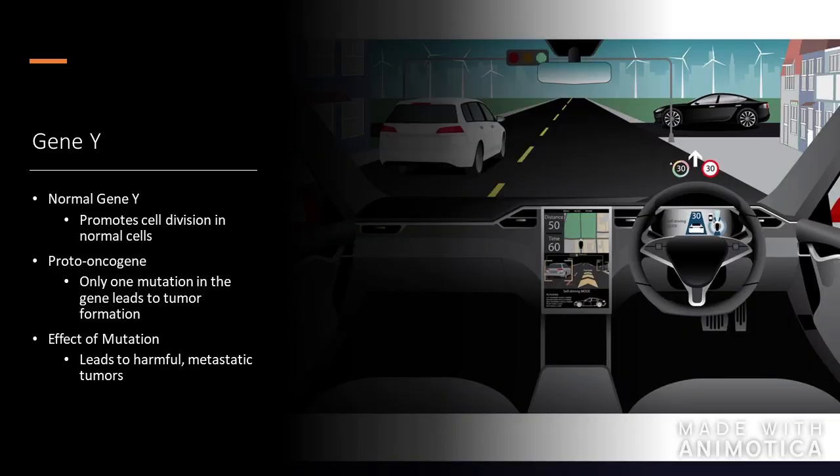For gene Y, normally this would promote cell division in normal cells. I think it's a proto-oncogene because only one mutation in the gene leads to a tumor forming. The effect of this mutation leads to a harmful metastatic tumor. I think of this as a self-driving car where the computer forgets to stop and you end up rear-ending the car in front of you.